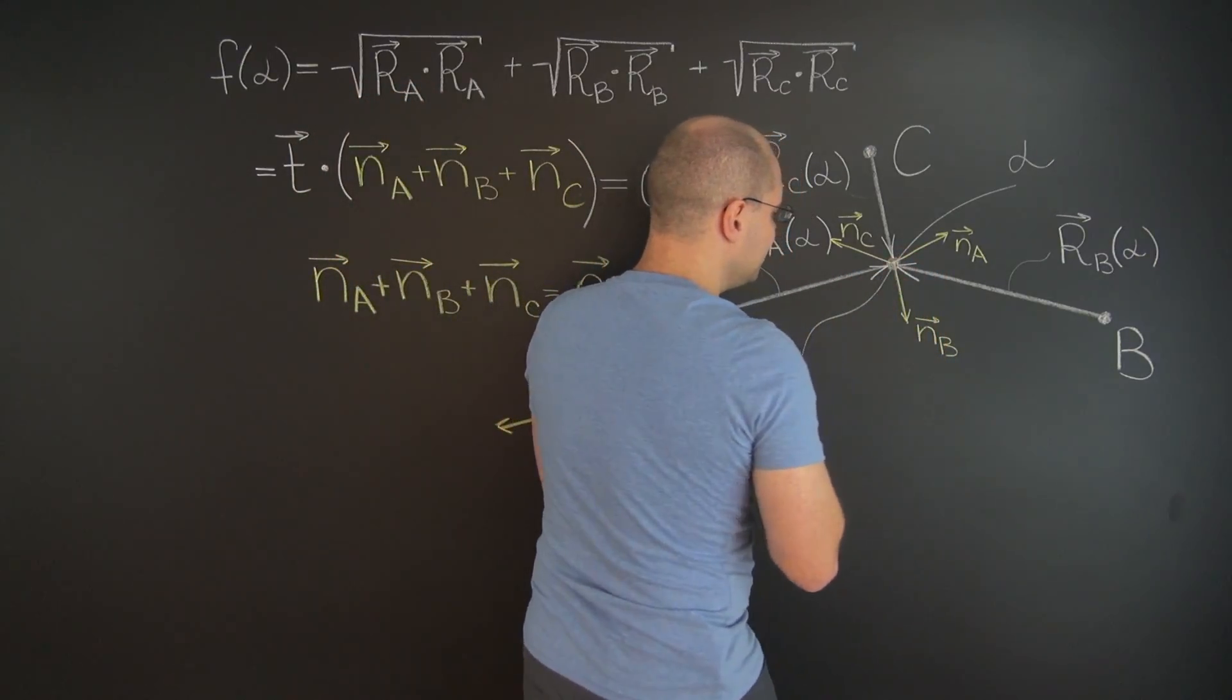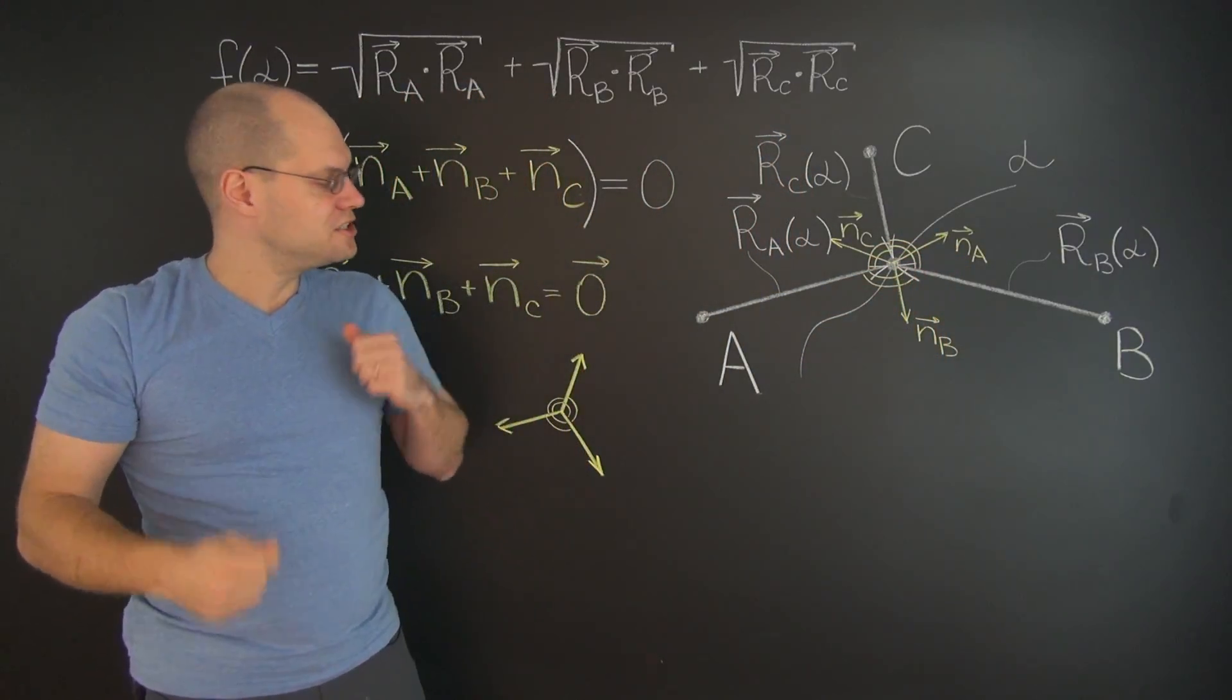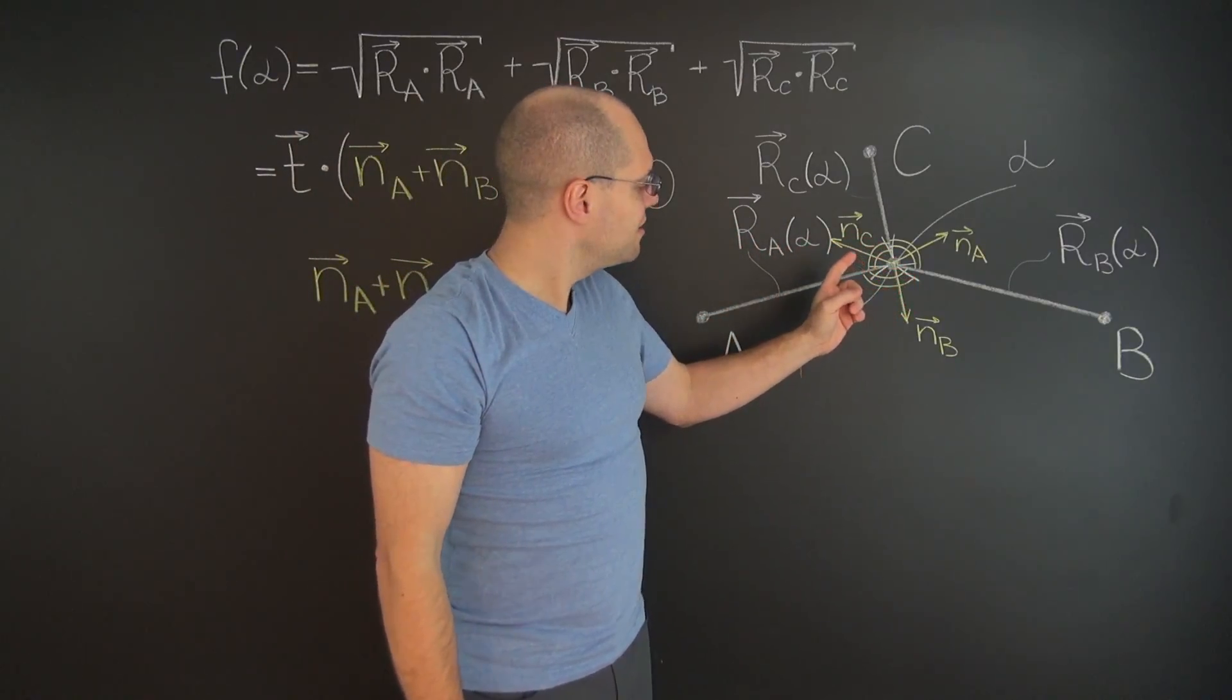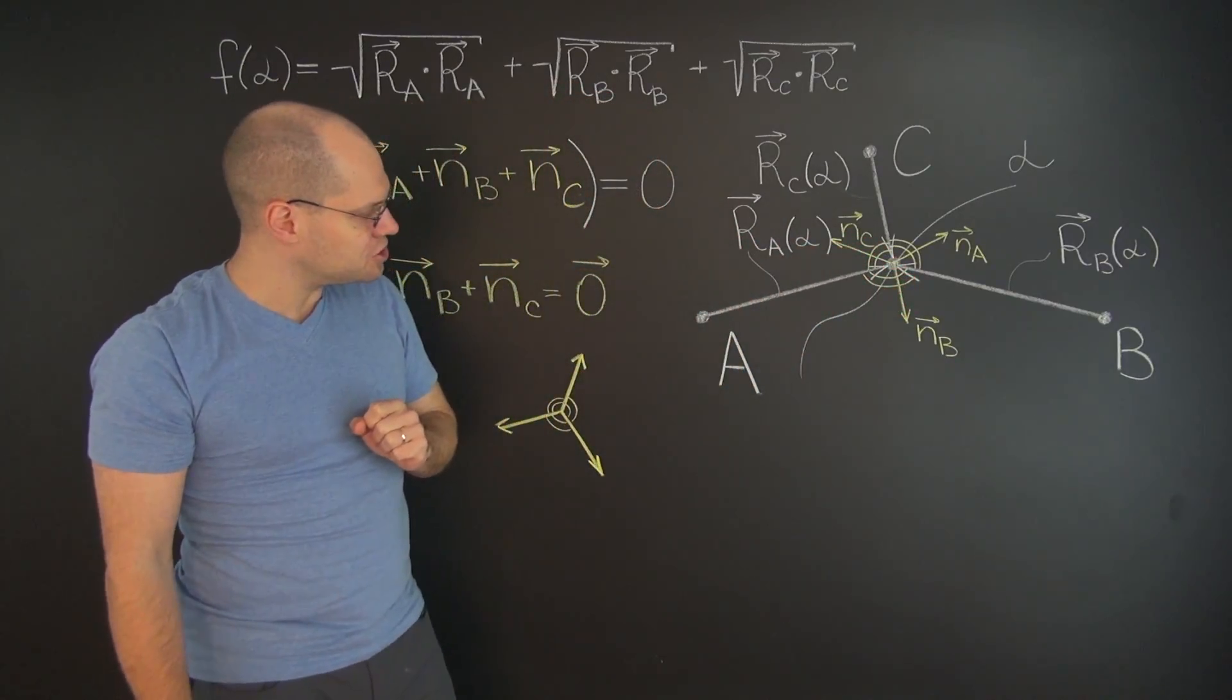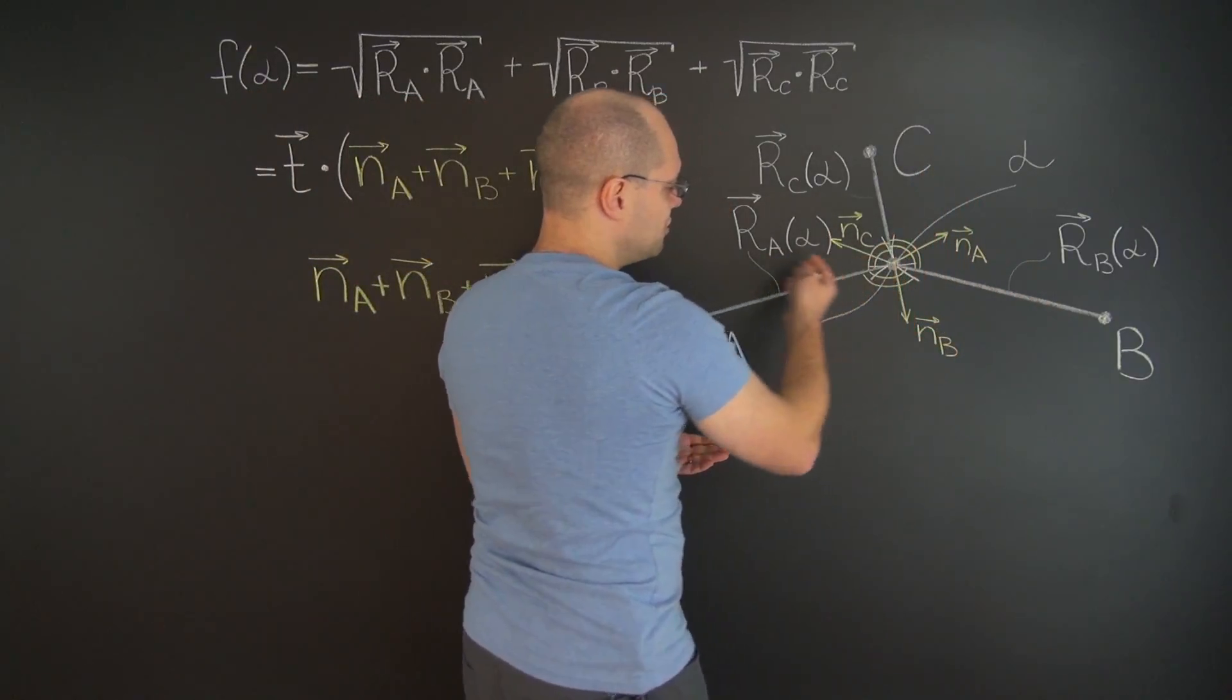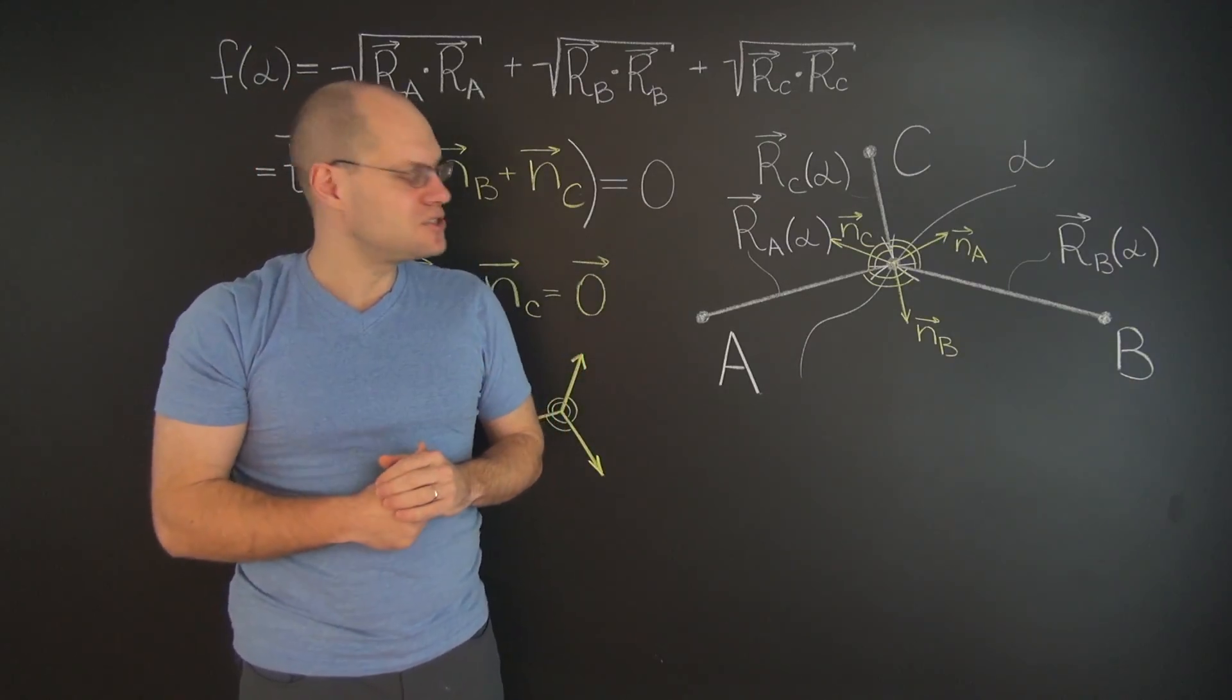That each one of these angles must be 120 degrees. So if such a point exists, then it's actually not hard to show geometrically that that point would be unique. Because it would be the intersection of three circles.